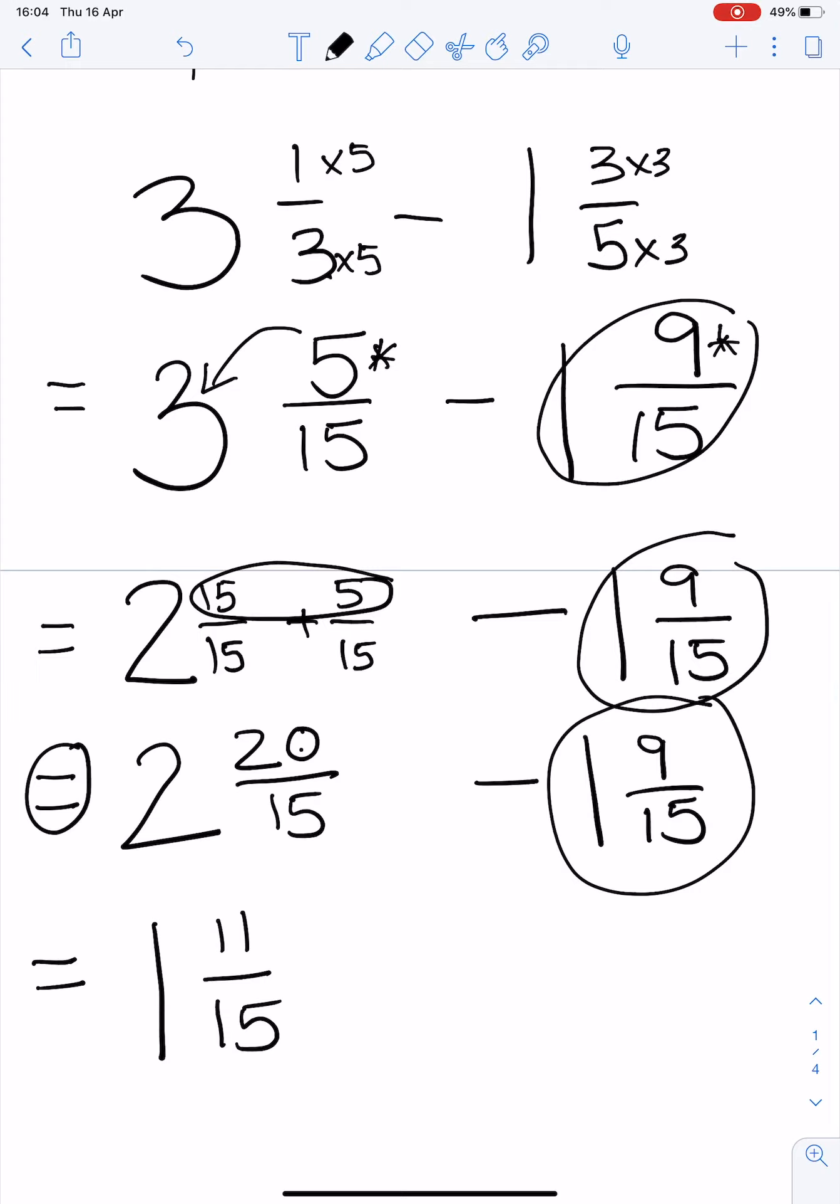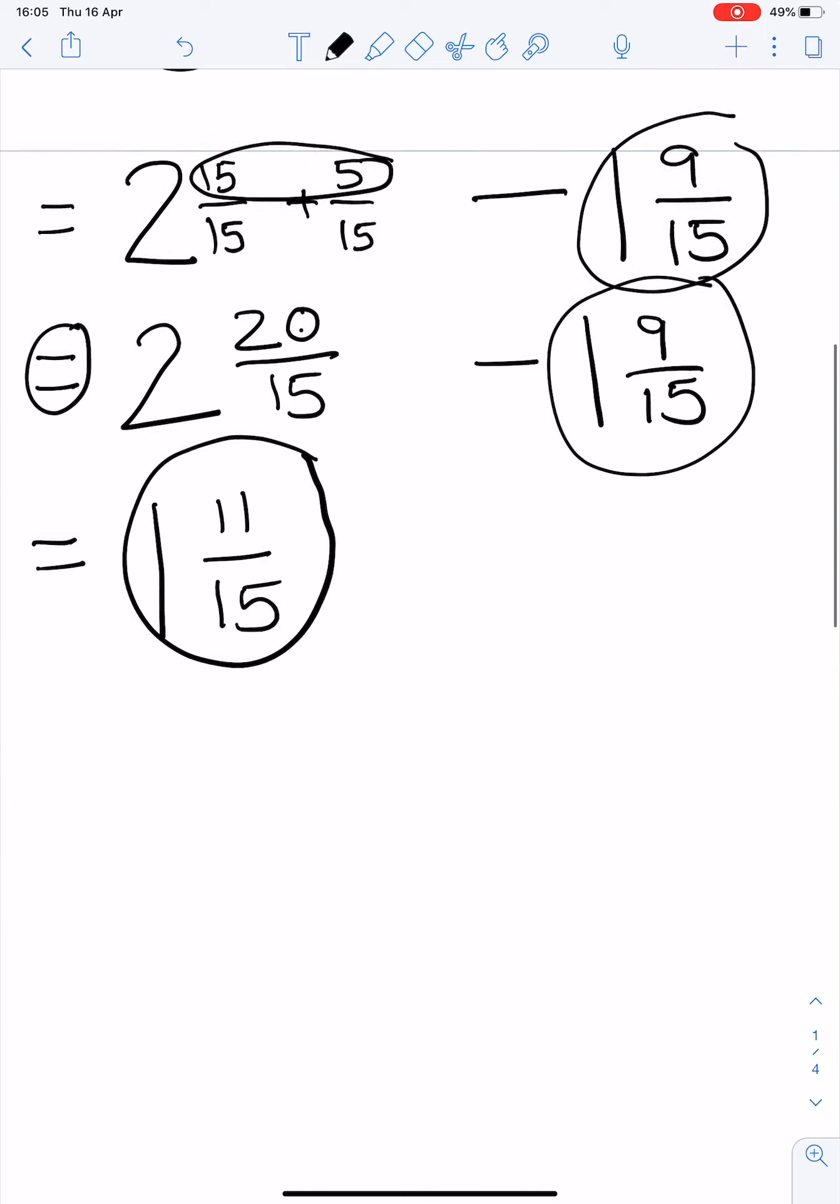Grade 7s I am going to do this sum again in a different way, because it is important that you choose the way that suits you. So let's redo that problem again. 3⅓ - 1⅗. This time I am going to make both fractions into improper fractions. Now remember we called these the hamburger sums. 3 times 3 is 9 plus the 1 is 10. Minus 5 times 1 is 5 plus 3 is 8.